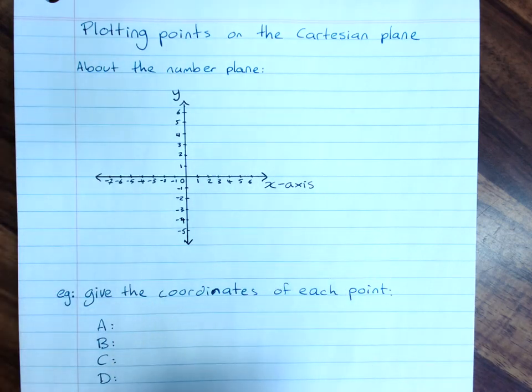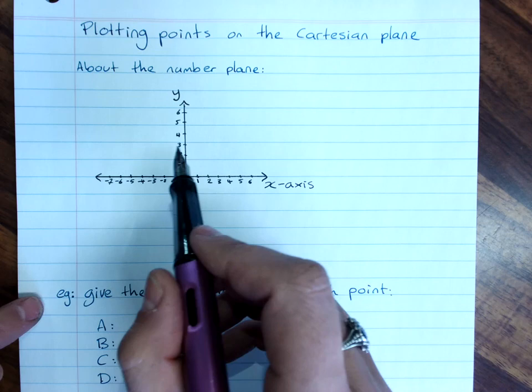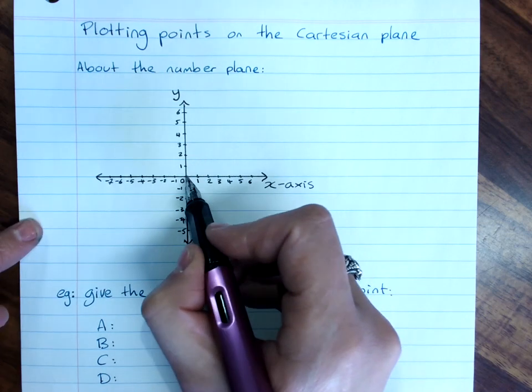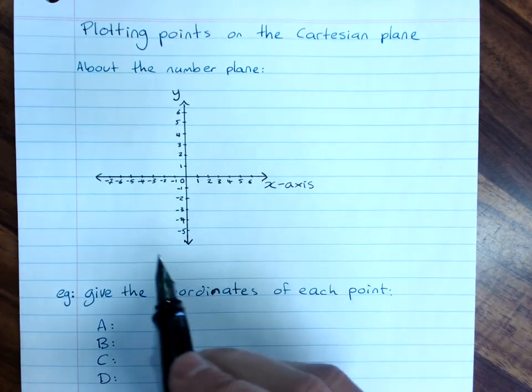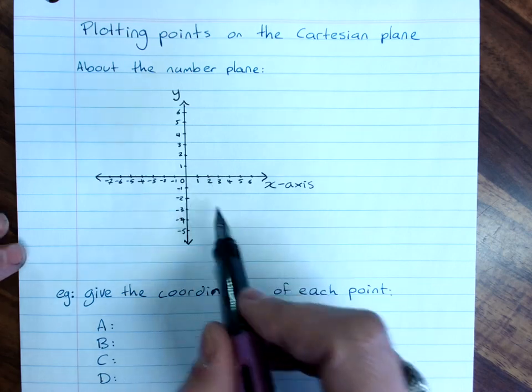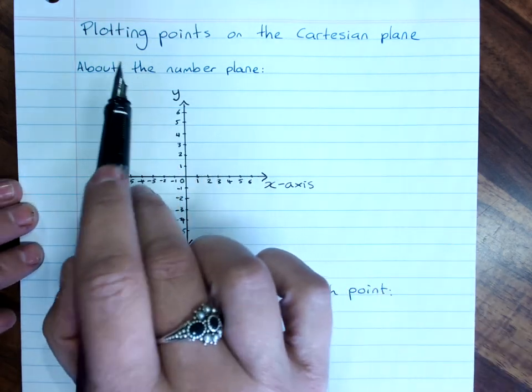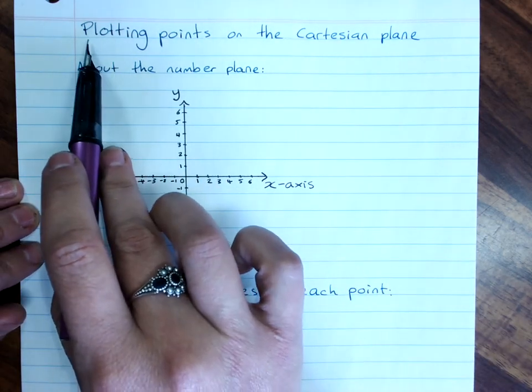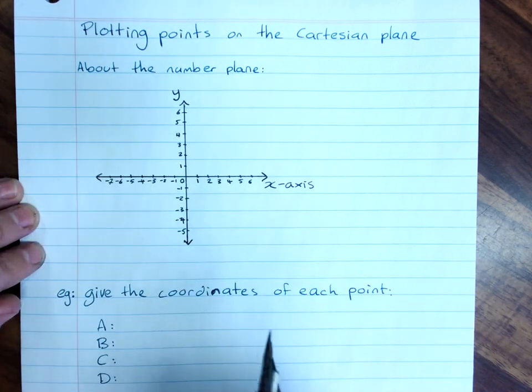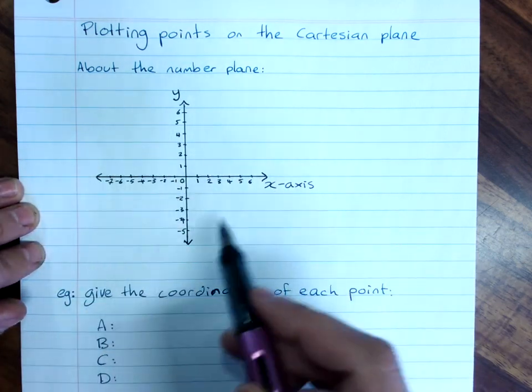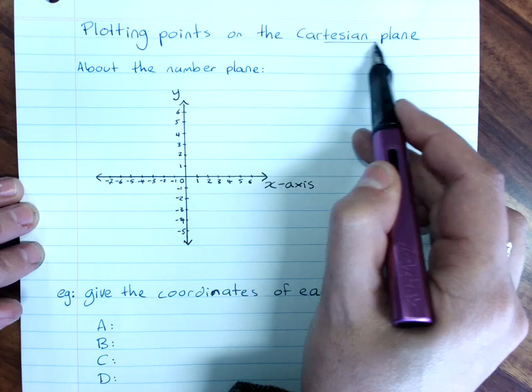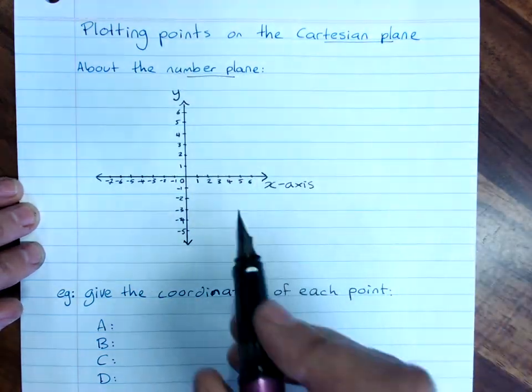So this is your number plane. It would be drawn on grid paper. It's worth knowing that zero right in the center is called the origin. Cartesian, and what we're learning to do, which we've already learned before, is plotting points on the Cartesian plane. A number plane, Cartesian plane, same thing, different name for it.